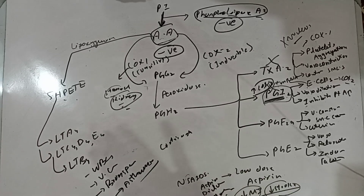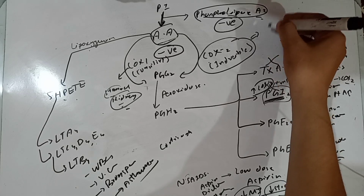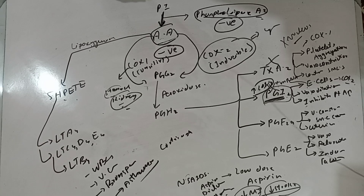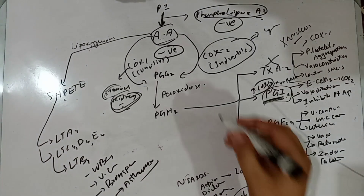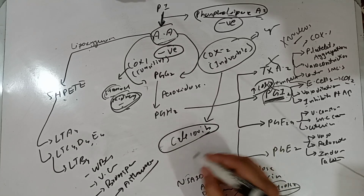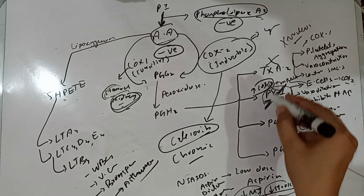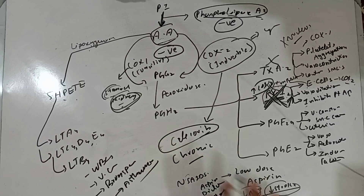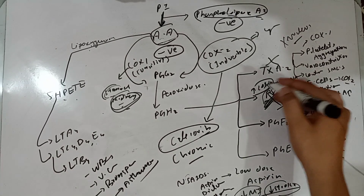COX-2 is inducible in response to cellular injury markers such as cytokines, endotoxins, growth factors, and tumor promoters. To address the risk of stomach and kidney damage, selective COX-2 inhibitors were designed for inflammation, which include celecoxib. However, when selective COX-2 inhibitors are used chronically, they inhibit PGI2 synthesis, causing platelet aggregation to occur and increasing MI risk. So selective COX-2 inhibitors are linked to increased MI risk due to inhibition of PGI2 synthesis.